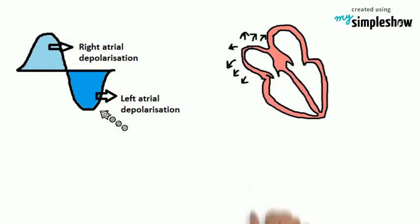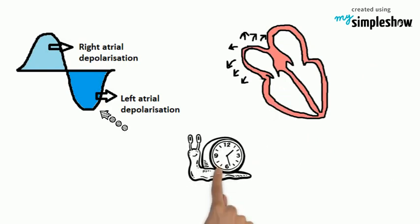In right atrial enlargement, it takes a lot of time in spreading electrical activation through the right atrium. As a result, this will affect the first half of the P-wave. Left atrial depolarization is normal in RAE.